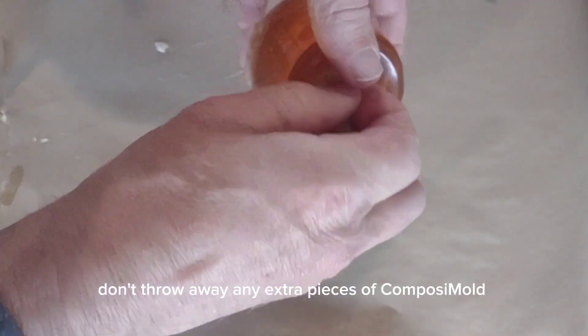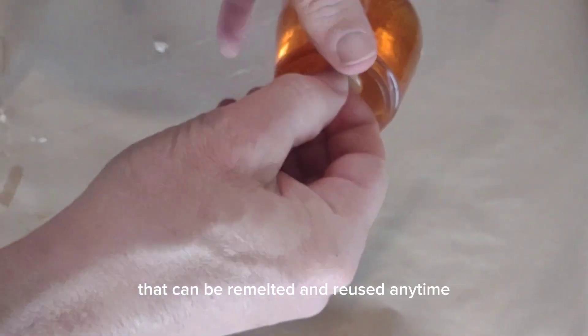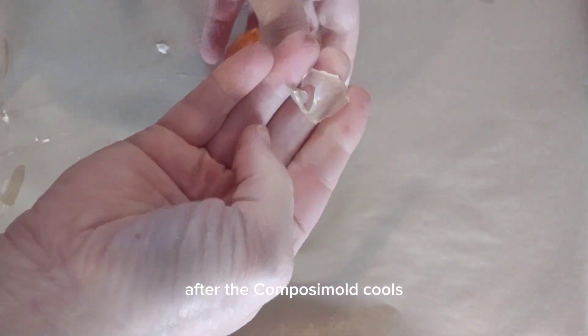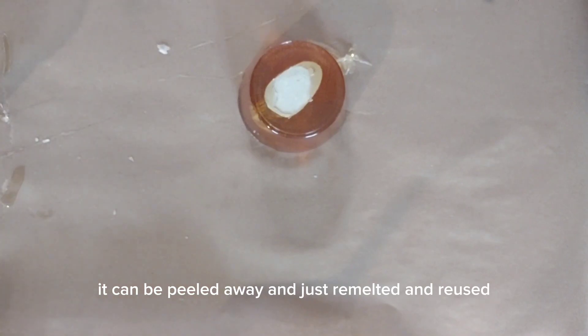Don't throw away any extra pieces of composite mold that can be remelted and reused anytime. After the composite mold cools, it can be peeled away and just remelted and reused.